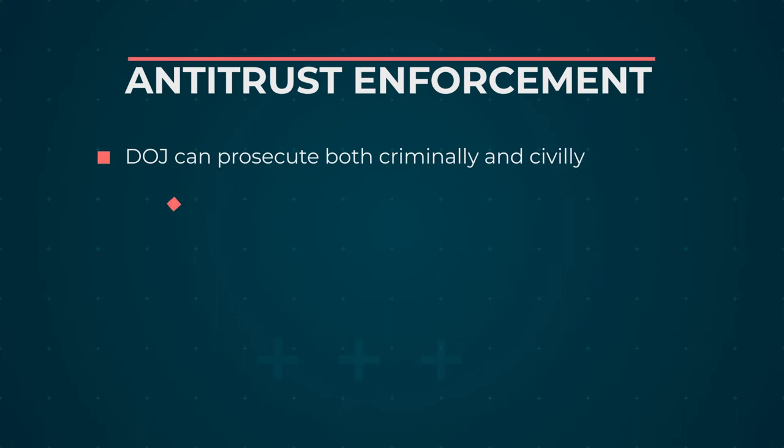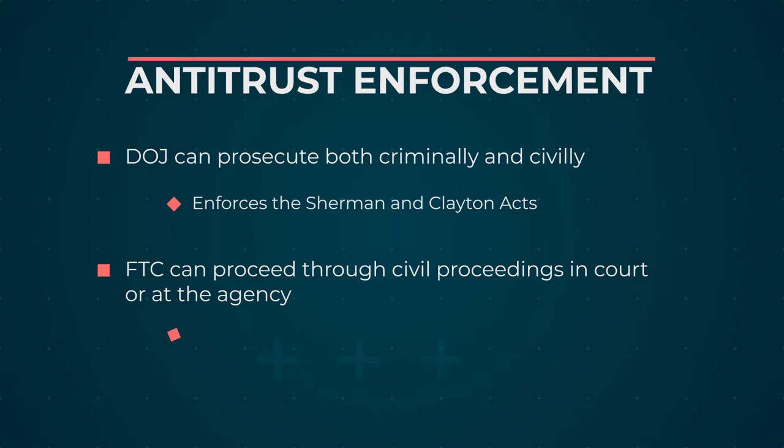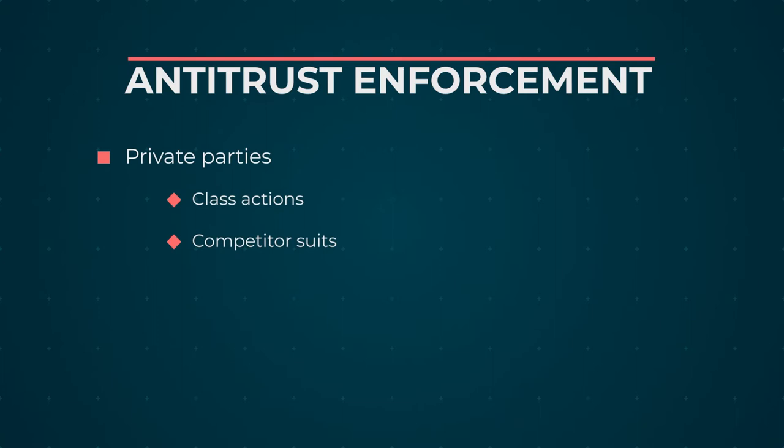So how are these laws enforced? There are a variety of enforcement mechanisms in the United States because these laws are so important — Congress wanted multiple enforcement. The Justice Department can proceed both criminally and civilly. The FTC, which was created in 1914, can proceed through administrative proceedings or through civil cases going to court. In the United States, private parties can sue for treble damages, which is a significant inducement. And state attorneys general have the ability to sue to enforce the various state antitrust laws. So there's lots of enforcement in the United States.